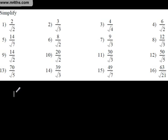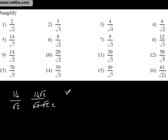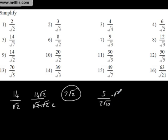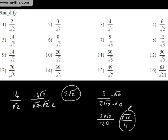Let's look at some more. So 14 over root 2: we get 14 root 2 over root 2 times root 2, which is 2. Cancelling gives 7 root 2. If we had 5 over 2 root 10, multiply top and bottom by root 10 only — we don't need to multiply by 2. Root 10 times root 10 is 10, times 2 is 20, giving 5 root 10 over 20, or root 10 over 4. Just be careful — sometimes they'll write something like 6 over root 25, and you realise that's actually just 5.